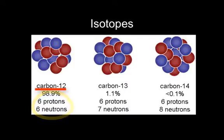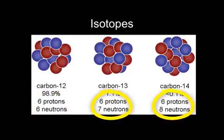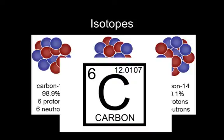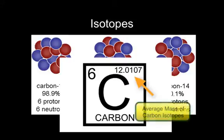The six-proton, six-neutron carbon has a mass of 12 atomic mass units, so we call it carbon-12. The others with seven or eight neutrons we call carbon-13 and carbon-14 respectively. If you look at the periodic chart for the mass of carbon, you'll see it's listed as 12.01 or even 12.0107 — that's the average mass of the different forms of carbon isotopes.